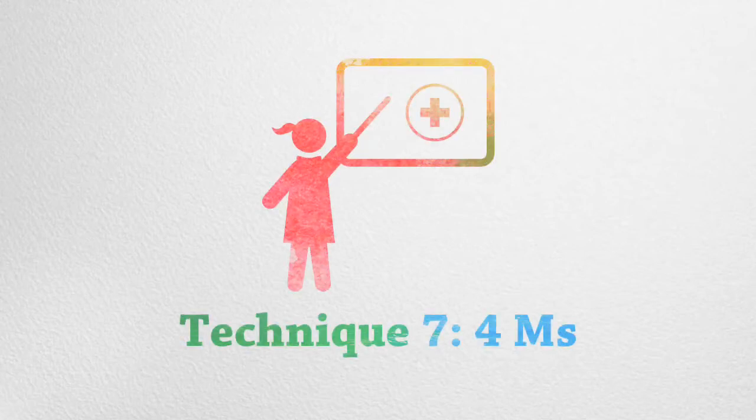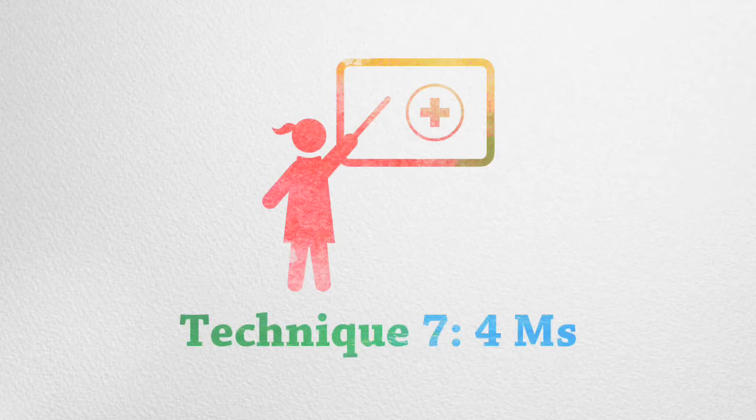Technique number seven, four Ms. Given the importance of objectives and bringing focus, discipline, and measurability to a lesson, it's important to think about what makes an objective useful and effective.